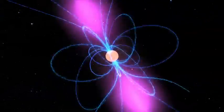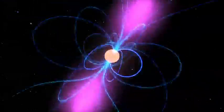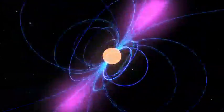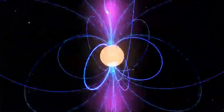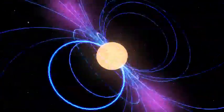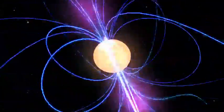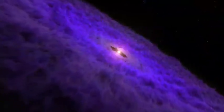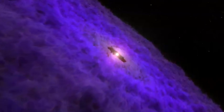A neutron star is what remains when a star several times the mass of the Sun collapses and explodes. With more than the Sun's mass packed into a sphere less than 18 miles across, these objects are incredibly dense. Just a sugar cube-sized piece of neutron star can weigh as much as all the water in the Great Lakes.